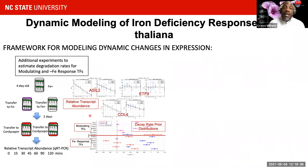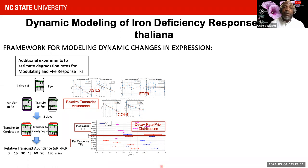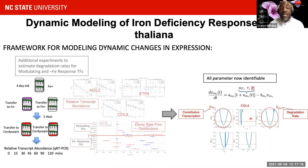We ran additional experiments to estimate a distribution of the degradation rate of all genes within the system using cordycepin — we essentially stopped transcription and then measured or approximated the degradation rate of the corresponding transcripts. This gave us a priori knowledge on the distribution of the degradation rates. Running back through the profile likelihood analysis confirmed that combining this with a fixed value for the rise rate allowed us to assess that the parameters were now identifiable.